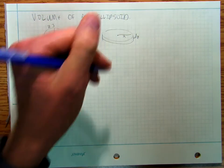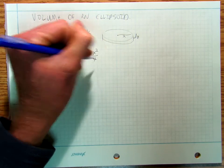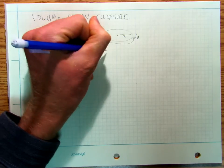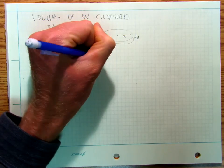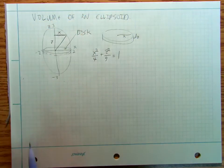and my formula is actually going to be that x squared over 4 plus z squared over 9 equals 1.